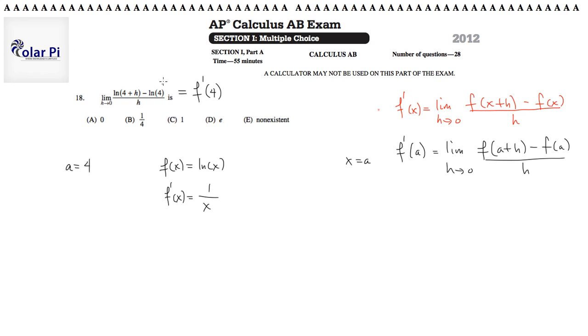then F prime of X is equal to 1 over X. So then, since we said this whole expression is just asking for F prime of 4, F prime of 4 must equal 1 over 4. Done. Ciao.